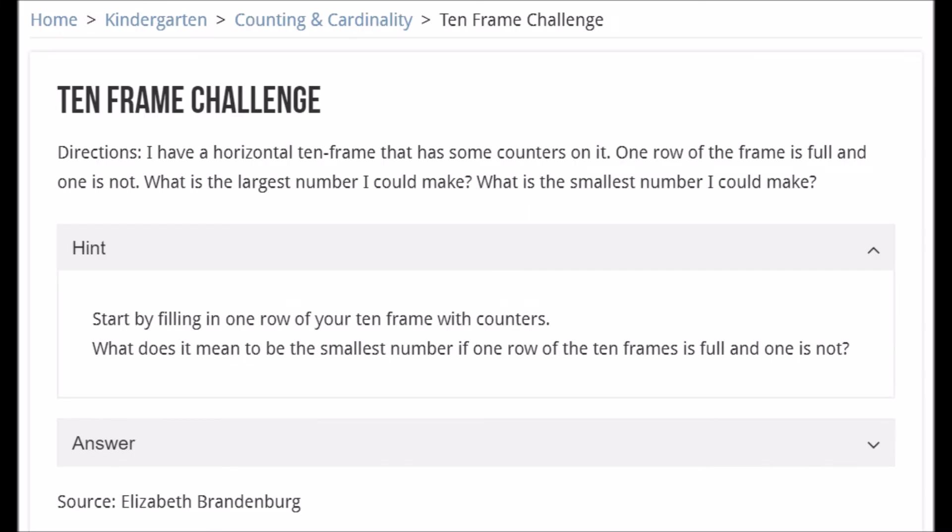So the hint for this problem says, start by filling in one row of your 10 frame with counters. What does it mean to be the smallest number if one row of the 10 frames is full and one is not? Go ahead and pause and try to work on it. When you're ready, press play.